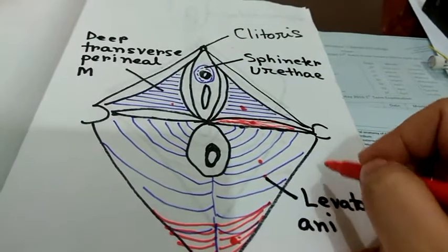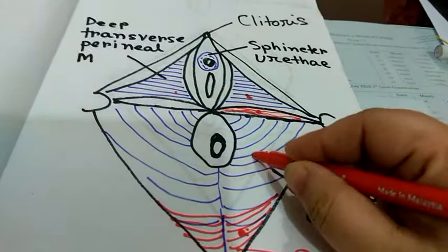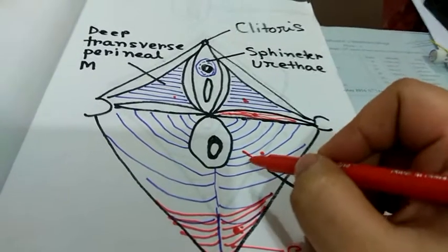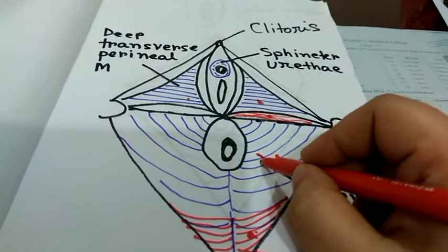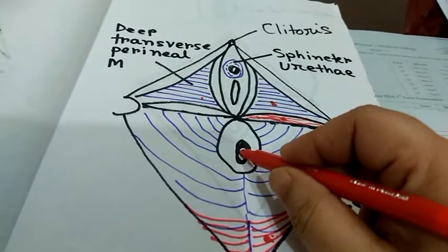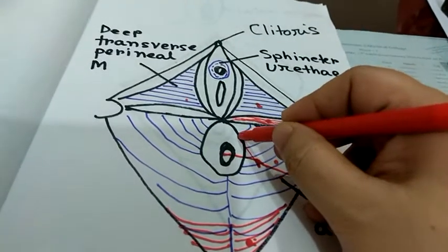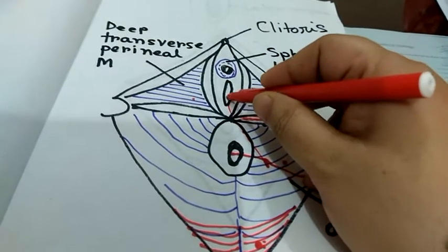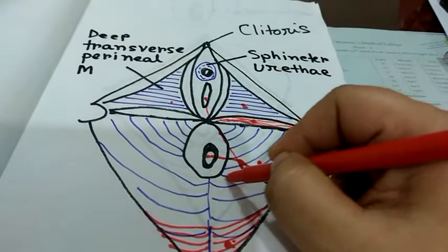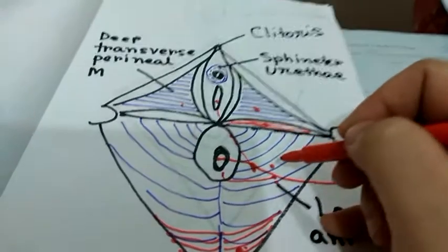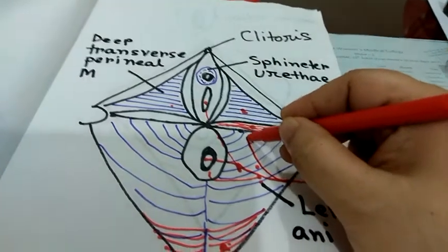The pudendal nerve first gives off the inferior rectal nerve. The inferior rectal nerve is a mixed nerve — it provides sensory supply to the skin of the anal orifice and also the lower part of the vagina, and gives motor supply to the external anal sphincter.